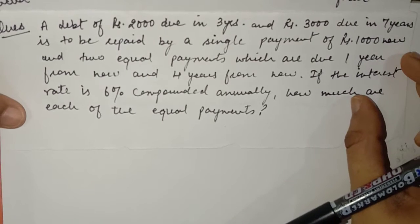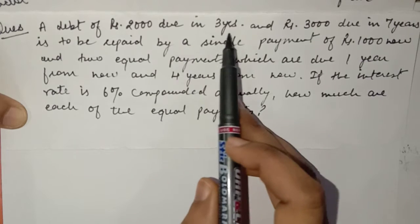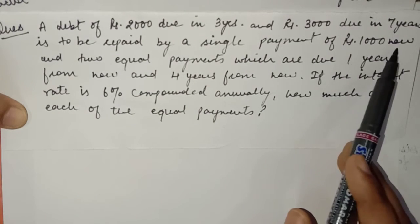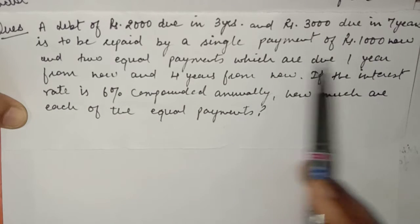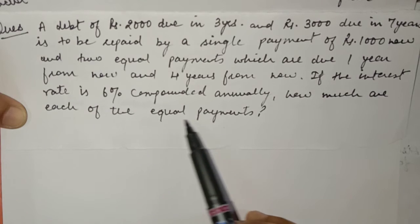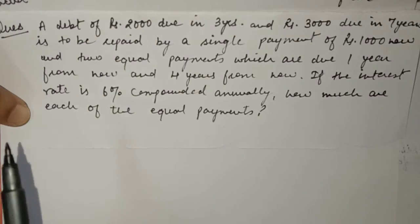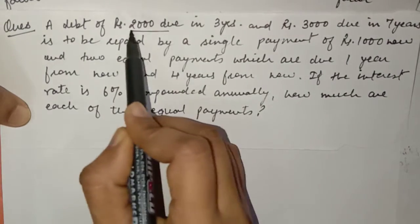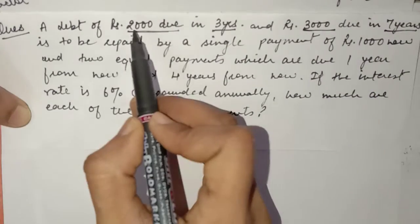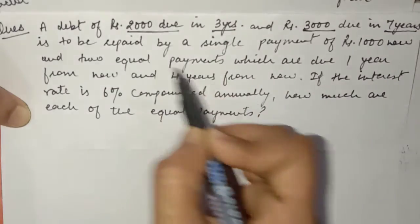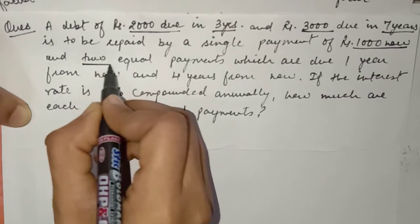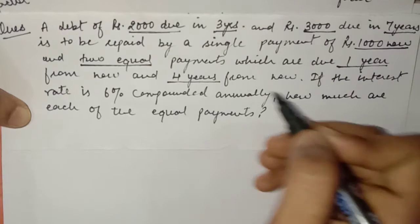In this question, we have a debt of Rs. 2000 which is due in 3 years and Rs. 3000 which is due in 7 years, to be repaid by a single payment of Rs. 1000 now and two equal payments due 1 year from now and 4 years from now. If the interest rate is 6% compounded annually, how much are each of the equal payments? We have two sets of obligation: the loans of Rs. 2000 and Rs. 3000, and the payments of Rs. 1000 now plus two equal installments.